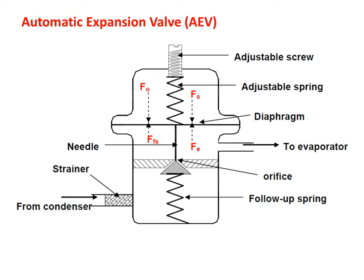An important characteristic of the AEV is that it closes off tightly when the compressor cycles off and remains closed until the compressor cycles on again. It has relatively poor efficiency compared to other refrigerant flow controls, as it permits only a small portion of the evaporator to be filled with liquid during heavy load periods. The constant pressure characteristic limits the capacity and efficiency of the refrigeration system at times when high capacity and efficiency are desired. If the load on the evaporator falls below a certain level, the valve may overfeed the evaporator, causing liquid to enter the suction line and potentially damage the compressor.